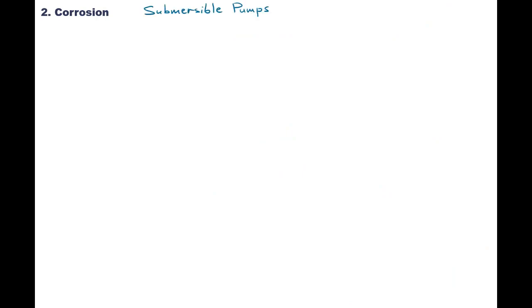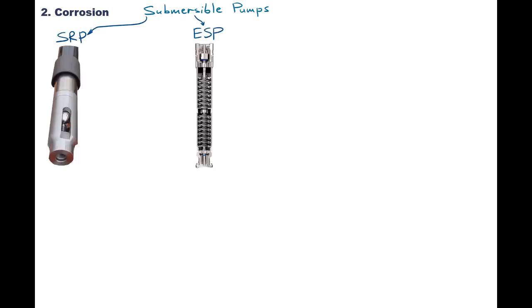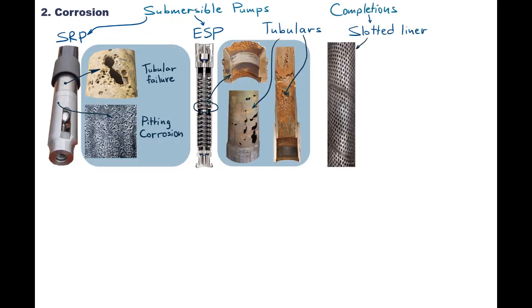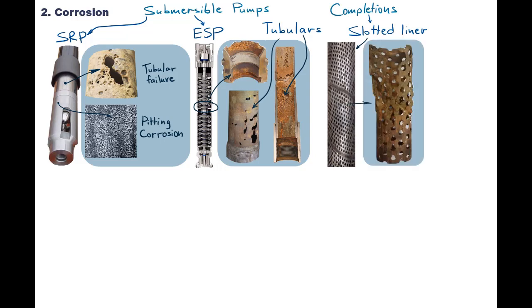HCl is a strong acid and it will react with steel components downhole. For example, submersible pumps such as sucker rod pumps and electrical submersible pumps. After exposure to HCl, they may get damaged beyond repair. Well tubulars, screens, and completions are no exceptions and will suffer from contact with HCl.